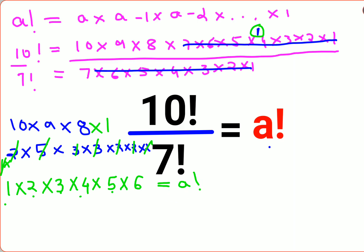From here we can say this is 6 factorial equals A factorial. So factorial on both sides can be cancelled. Therefore, the value of A for this question is 6.